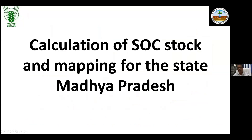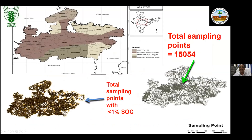I want to show how we have done this for Madhya Pradesh. The state has different soil types: alluvial soils, deep and medium black soils, mixed red and black soils, and shallow and medium black soils — from the MPCS soil map. We collected 15,054 samples from the state through the All India Coordinated Research Project on Micronutrients, Secondary Nutrients, and Heavy Metals. Most agricultural soils in Madhya Pradesh come below 1% carbon. From around 10,000 to 11,000 samples, we analyzed and developed a carbon map.